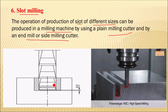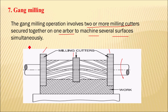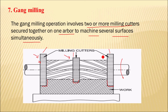Next is the gang milling operation. Gang milling involves two or more milling cutters mounted onto a single arbor to machine several surfaces simultaneously. At one time you can machine several surfaces of a workpiece, which saves machining time. Gang milling is used in repetitive types of work. The diameters of the milling cutters mounted on the arbor may be different, and different shape cutters can be used.